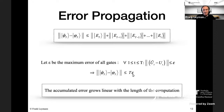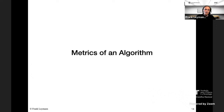Now, how do we measure whether an algorithm can run in this error-prone world? The metrics are called the depth and the width of the algorithm. Looking at an abstract algorithm with different gates — two-qubit gates and one-qubit gates — gates executed in parallel form a layer or level. The number of levels needed sequentially is the depth of the quantum circuit, and the width is the number of qubits the overall algorithm manipulates.